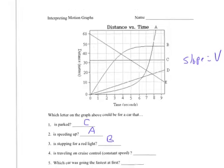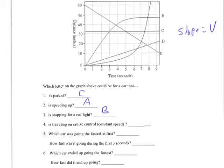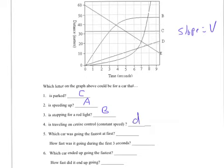Which car is traveling on cruise control? In other words, it has a constant speed. That means the slope is not going to change. Well, there's two cars: car D traveling at constant speed away from me, and car E traveling at constant speed towards me. So both D and E would work.